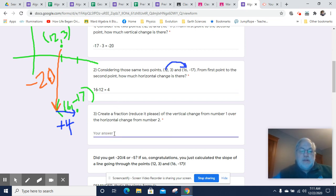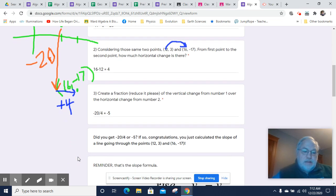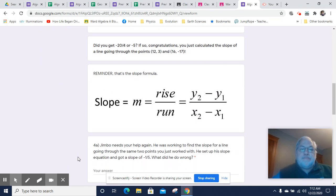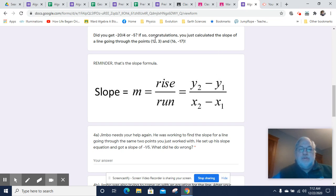Now, what's the fraction that we're going to get? We're going to have negative 20 over 4, which is going to equal negative 5. So if you've got negative 5, congratulations, you just calculated the slope for those two points. A line going through 12, 3, and 16, negative 17.